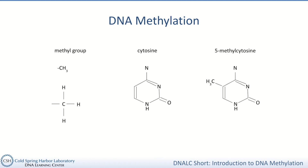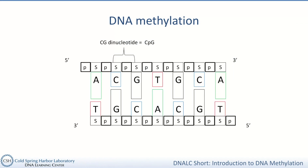In mammals, including humans, this mostly happens in the context of a CG dinucleotide, sometimes written as CpG. That just means a cytosine in the DNA followed by a guanine, G. The P in CpG stands for phosphate, which refers to the phosphate group in the backbone of the DNA in between the C and its neighboring G. In plants and some other organisms, the pattern is a little bit different, and adenine A can also be methylated, but that isn't as common and isn't as well studied.